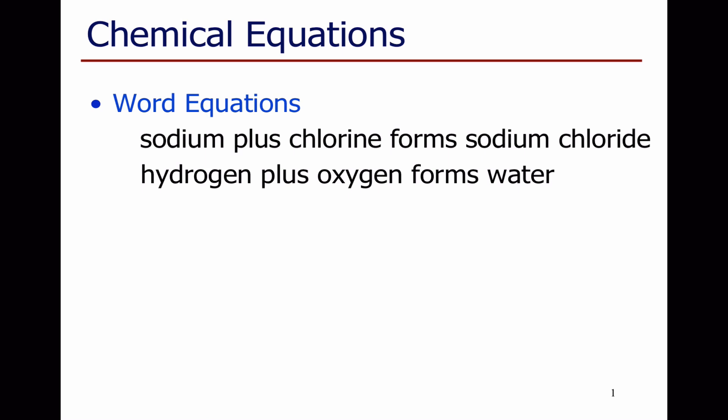Chemical equations tell us what happens during a chemical reaction. They tell us what the reactants are, the things we have before any reaction, and then tell us what the products are, the things that we have after the reaction.